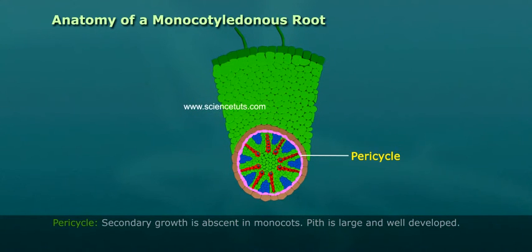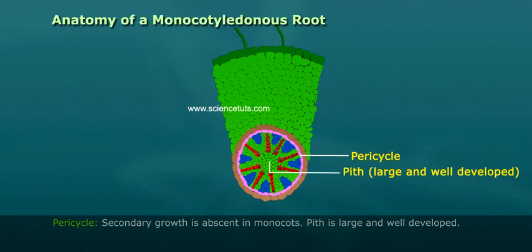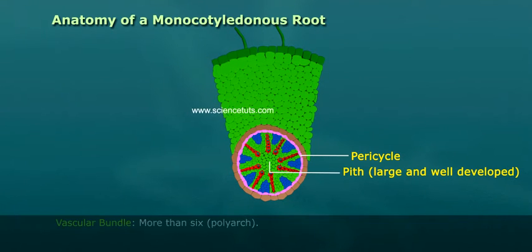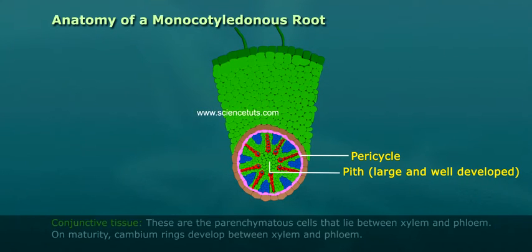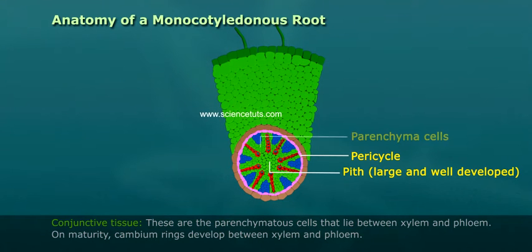Secondary growth is absent in monocots. Pith is large and well-developed. Vascular bundle has more than six polyarch. Conjective tissue are the parenchymeter cells that lie between xylem and phloem.